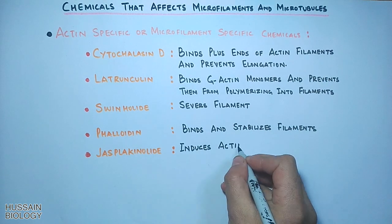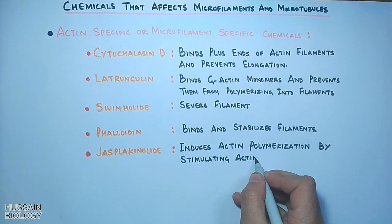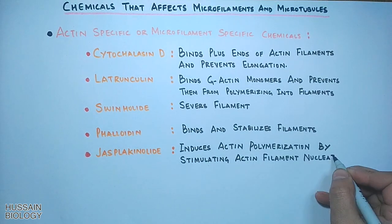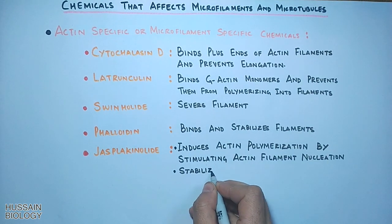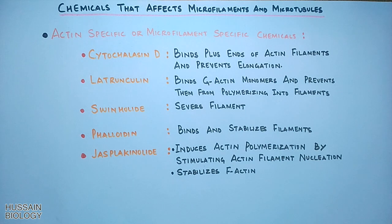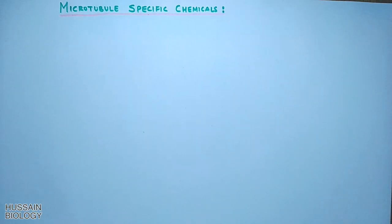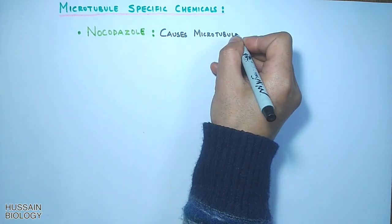Finally, we have Jasplakinolide, a macrocyclic peptide molecule. It induces actin polymerization by stimulating actin filament nucleation and also stabilizes F-actin. It must be noted that it competes with Phalloidin for actin binding sites. Now let's move towards microtubule-specific chemicals.